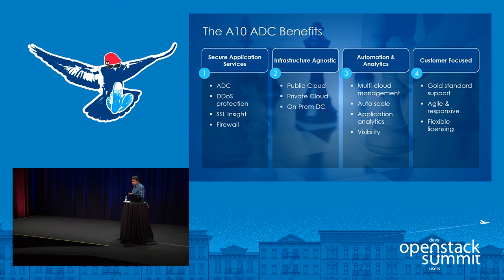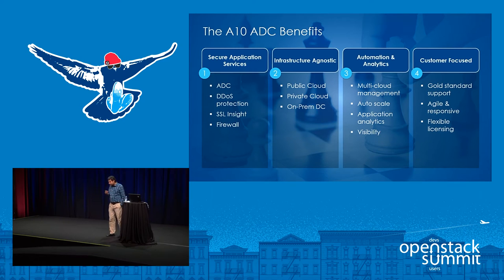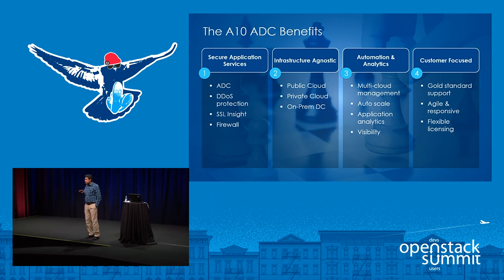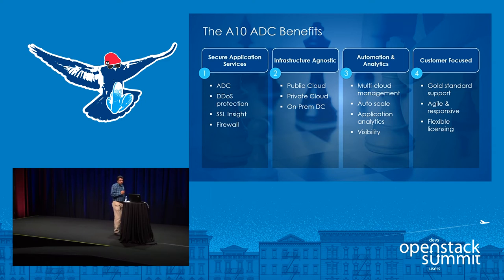A lot of organizations today have their traditional data centers with applications hosted there, which they will probably migrate over the next few quarters or years. At the same time, they are moving new applications to the cloud world — containerizing their applications and using microservices to spin up applications in cloud environments. The load balancing needs vary: some customers need higher performance and higher throughputs for traditional data center environments, while others need very agile ADC services that follow the applications. At Aten, we provide the most flexible options with solutions for both use cases.